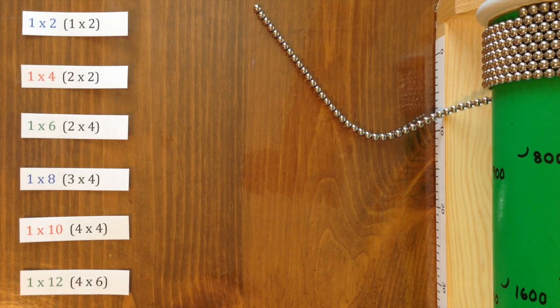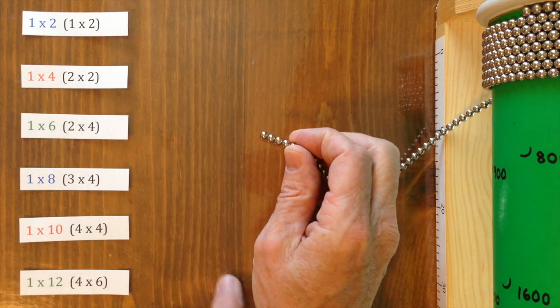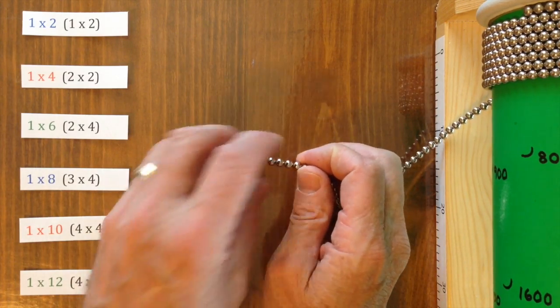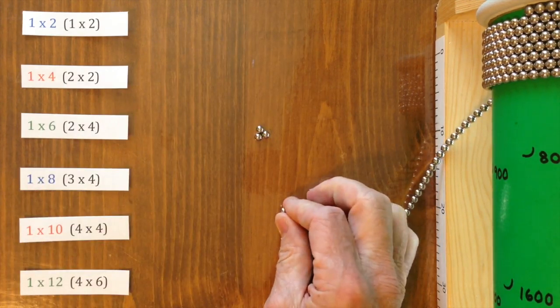I'll show how to make the first few pieces. The first one that's needed is a 1 by 2. That's just a triangle.